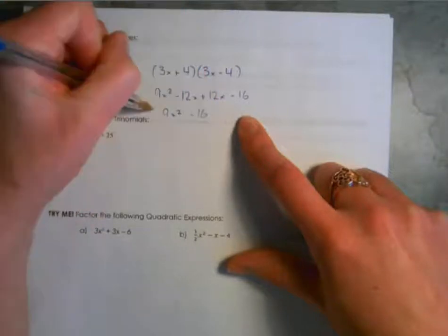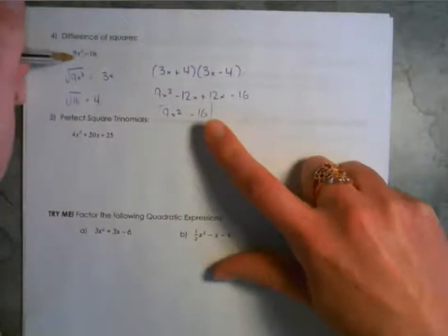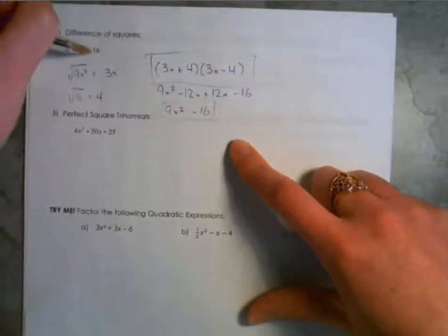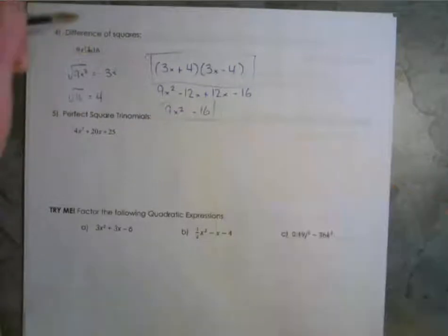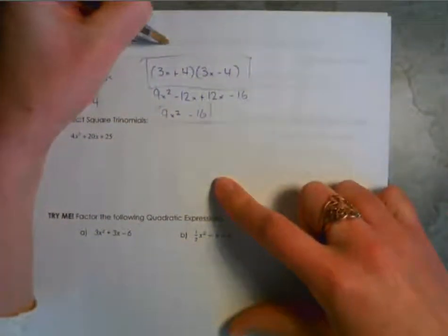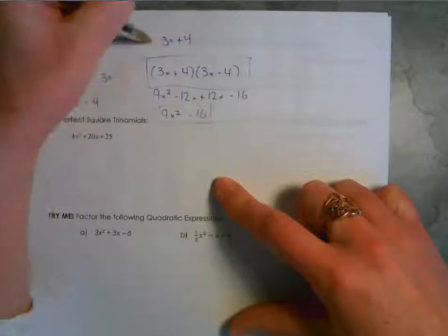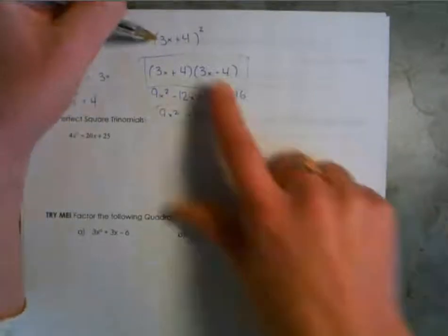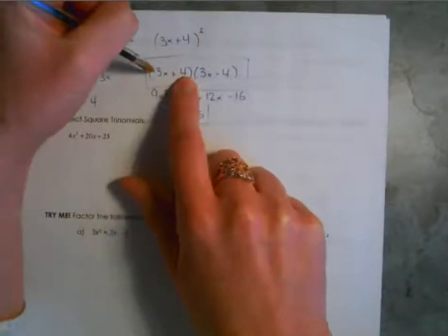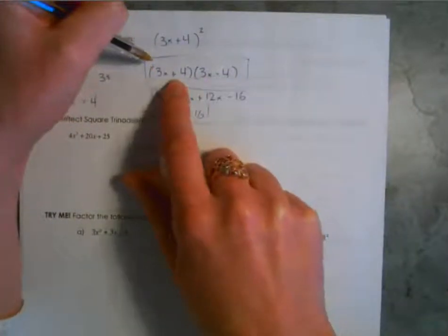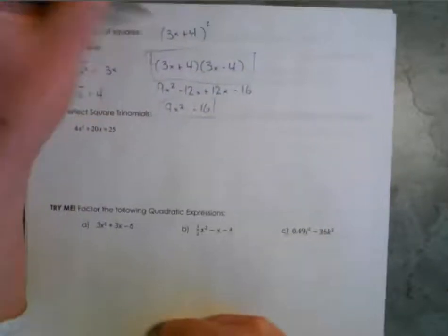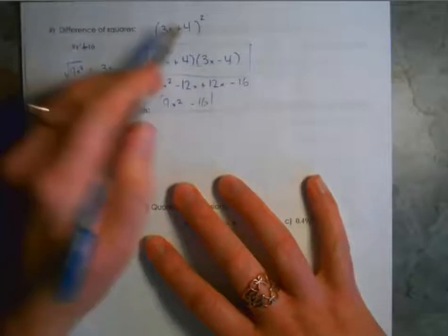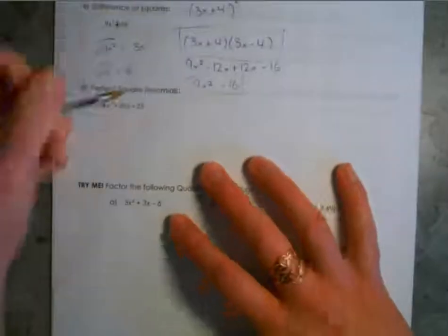If you check: 3x times 3x is 9x squared; 3x times negative 4 is minus 12x; 4x times 3 is positive 12x; and 4 times negative 4 is negative 16. We get 9x squared minus 12x plus 12x, which adds to zero, then minus 16. That's why we only have two terms — they always cancel in the middle. If it had been plus 16, you would write 3x plus 4 squared, since it would be the same bracket twice.